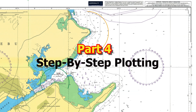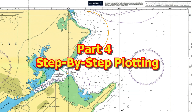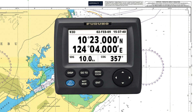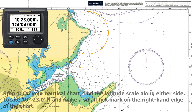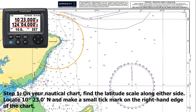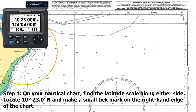Part 4: Step-by-step plotting. Let's plot this sample GPS position: latitude 10 degrees 23 minutes north, longitude 124 degrees 04 minutes east. Step 1: On your nautical chart, find the latitude scale along either side. Locate 10 degrees 23 minutes north and make a small tick mark on the right-hand edge of the chart.